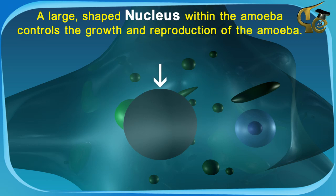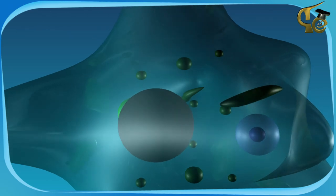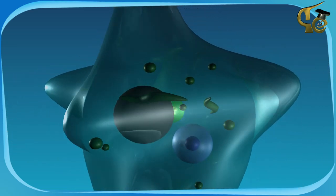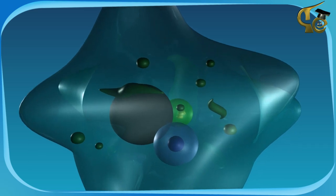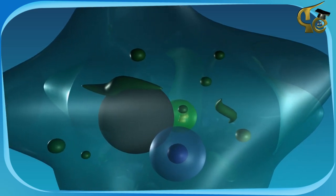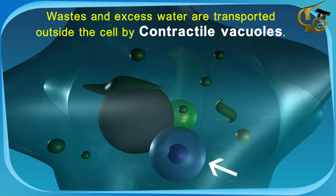A large-shaped nucleus within the amoeba controls the growth and reproduction of the amoeba. Wastes and excess water are transported outside the cell by a contractile vacuole.